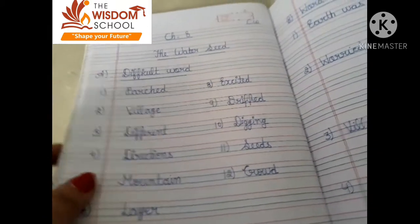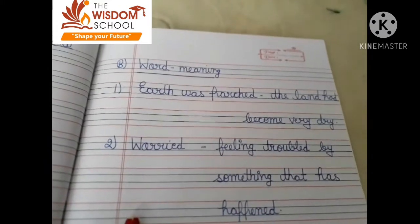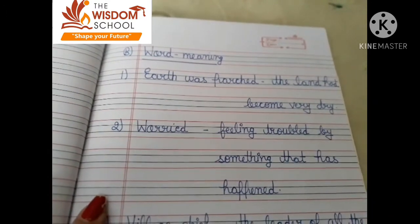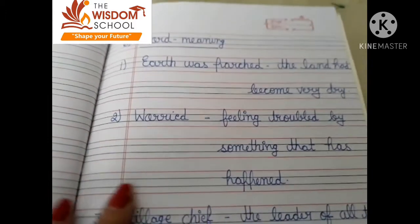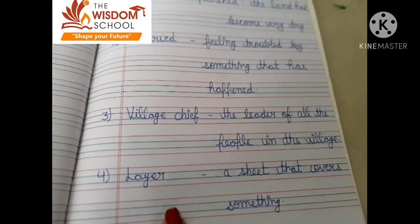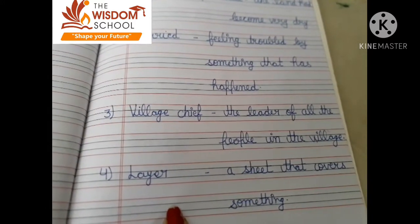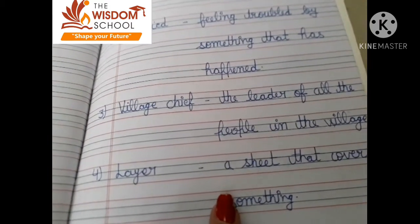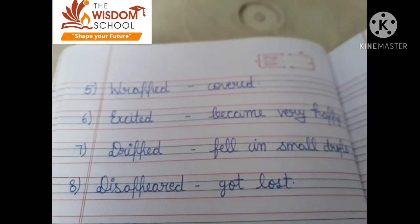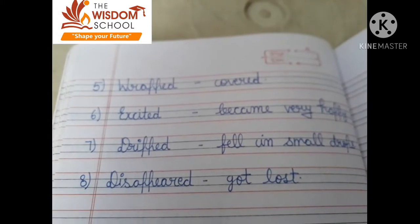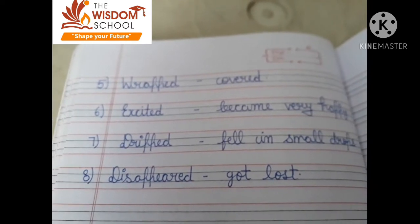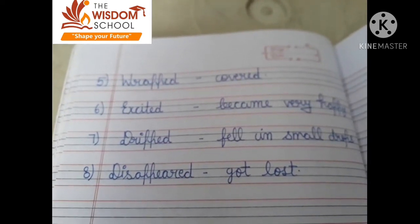Now come to the word meanings. 'Earth was parched' means the land had become very dry. 'Worried' means feeling troubled by something that has happened. 'Village chief' means the leader of all the people in the village. 'Layer' means a sheet that covers something. 'Wrapped' means covered. 'Excited' means became very happy. 'Drift' means fell in small drops. 'Disappeared' means got lost, ya gaib ho jaana.